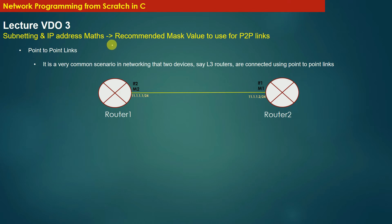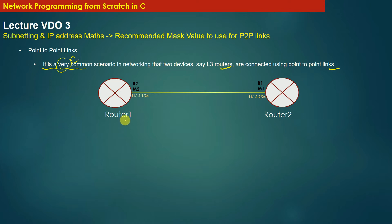Next we will try to understand the recommended mask value to be used for P2P links. It is a very common scenario in networking that two devices, say L3 routers, are connected using point-to-point links. Point-to-point links are those links which have only two end interfaces and there is no room to connect a third device to this link. That is why they are called point-to-point links.